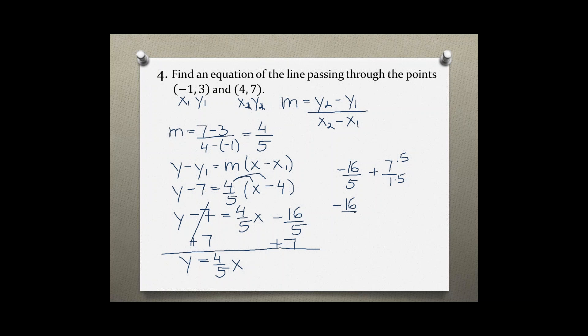Our new problem is negative 16 over 5 plus 7 times 5 is 35 over 5. negative 16 plus 35 is 19 over 5. So right here positive 19 over 5.